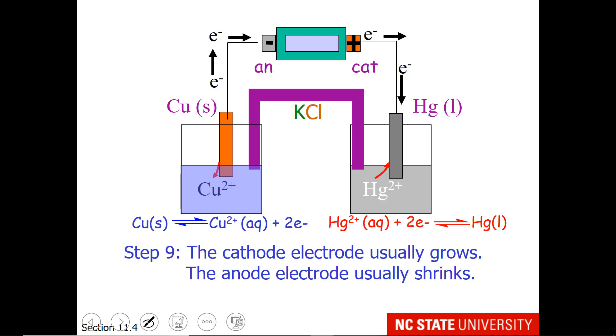The last part of this is the cathode electrode usually grows. We are making mercury liquid here. So what we would see as the reaction occurs is that our container is filling up and getting more full of mercury liquid. Whereas the anode electrode usually shrinks. We're taking copper and making copper 2+. So this metal strip of copper is going to get eaten away and become smaller as the reaction occurs. I say usually because sometimes redox reactions don't involve making a solid or a liquid species. Sometimes they go from one ion to another. Just remember that on your cathode compartment, your product is forming, which is typically a liquid or solid, so it's growing. And on your anode compartment, typically your solid or liquid component is shrinking or disappearing.